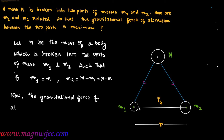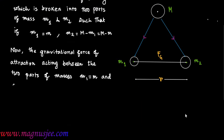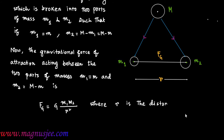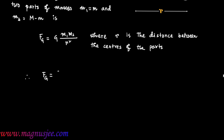The gravitational force of attraction acting between the two parts of masses m1 = m and m2 = M − m is given by FG = G·m1·m2 / r², where r is the distance between the centers of the two parts. Therefore, FG = G·m·(M − m) / r².